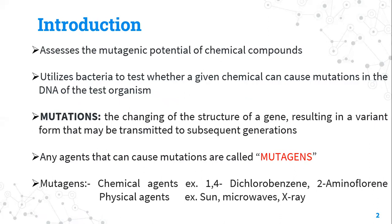Any agent that can cause mutation is called a mutagen. There are many types of mutagens: chemical mutagens, physical mutagens, and biological mutagens. Examples of chemical mutagens include 1,4-dichlorobenzene and 2-aminofluorene. Physical mutagens include sun rays, microwaves, and X-rays. Biological mutagens that can cause mutations include transposons and viruses.